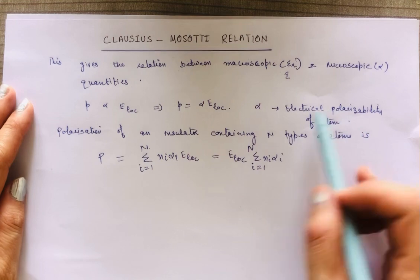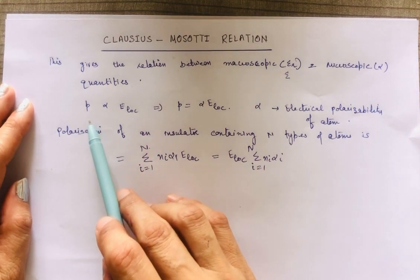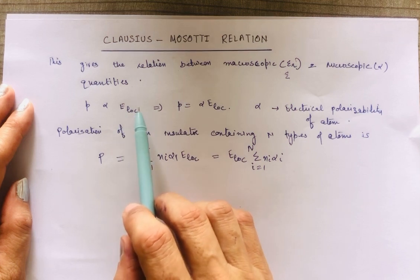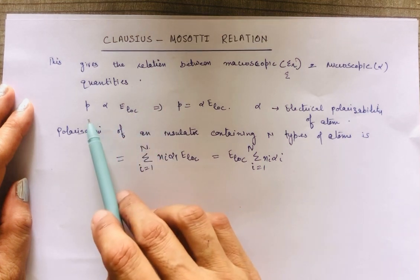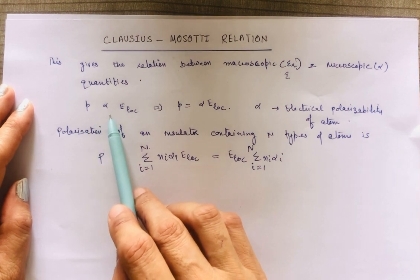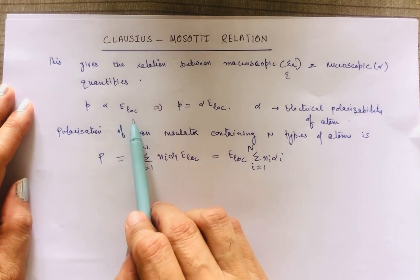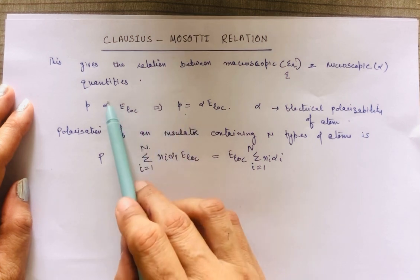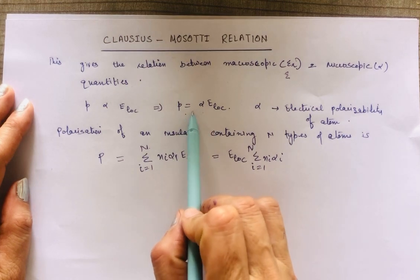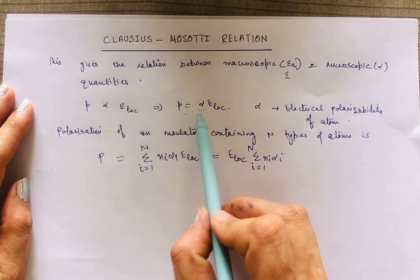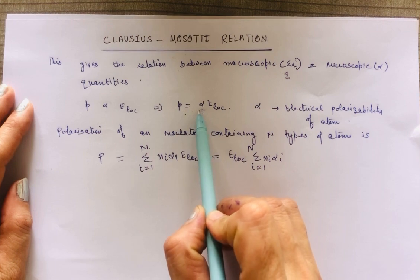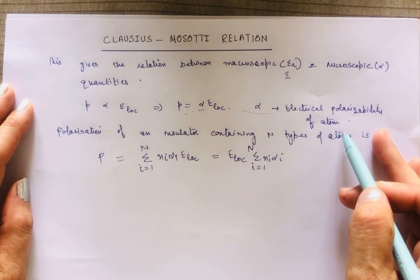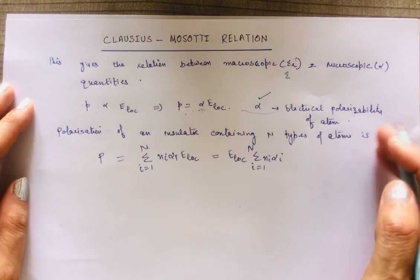As we know, the dipole moment is directly proportional to the local electric field when a dielectric is polarized — when we apply an electric field, dipole moment is directly proportional to E_local. When we put the proportionality constant, it becomes alpha. This alpha is called the electrical polarizability of the atom.